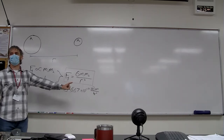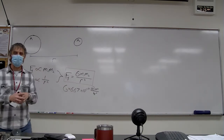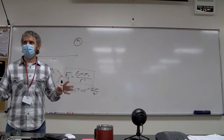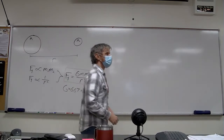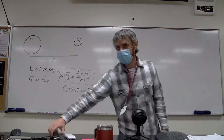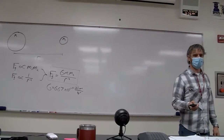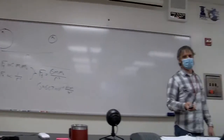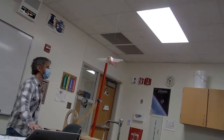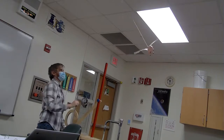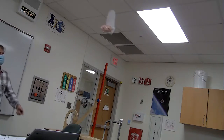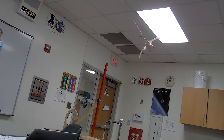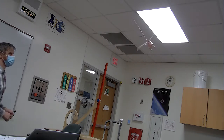The basic understanding you need is that this is a unit based on general circular motion — for anything. You can have circular motion like planets orbiting stars, or moons orbiting planets, but this is circular motion too. The stuff we're going to talk about — yes, we're talking about gravity here — but then we're going to generalize our conclusions to any circular motion.